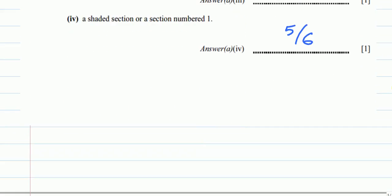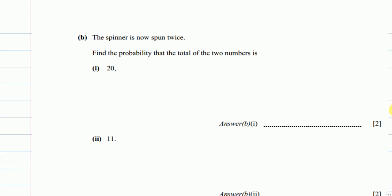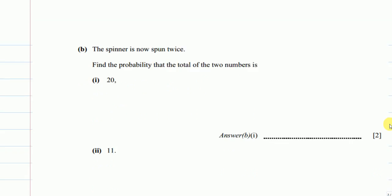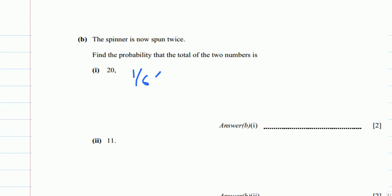Up till now it's pretty simple. Let's have a look at part B. The spinner is now spun twice. Find the probability that the total of the two numbers is 20. The only way to get 20 is the combination of first one is 10 and the other one is 10. So it will be 1/6 times 1/6, which gives 1/36.